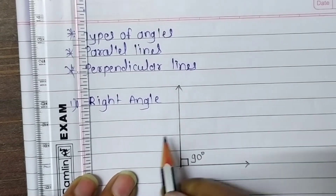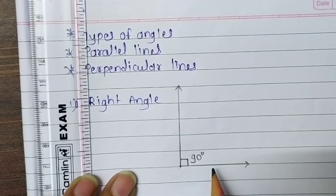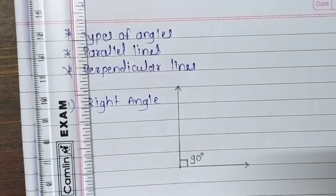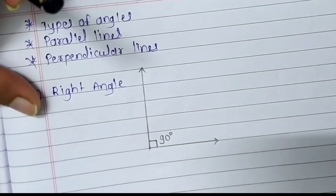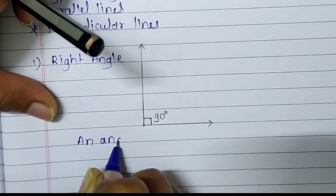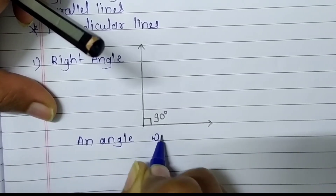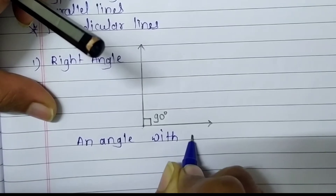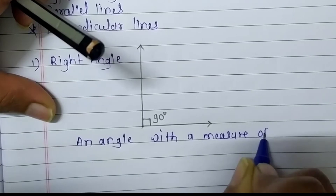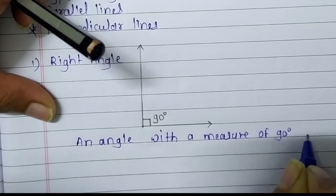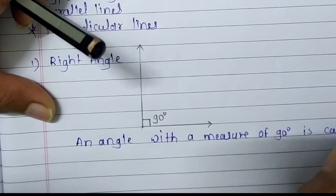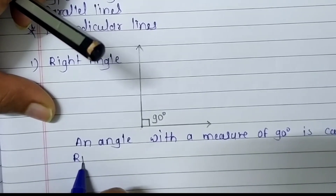When we draw this type of angle, that angle is known as a right angle — meaning an angle with a measure of 90 degrees is called a right angle.